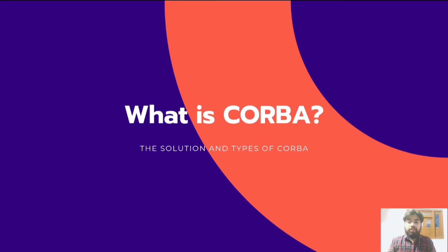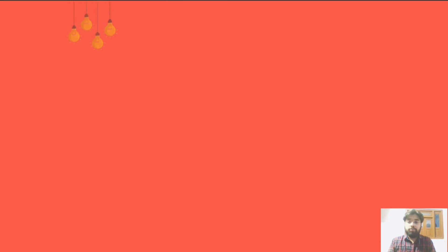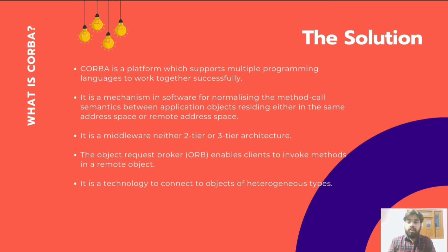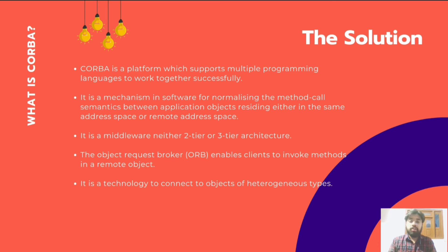Since we are clear with why we need CORBA and its history, let's understand what CORBA actually is. CORBA is a platform which supports multiple programming languages to work together successfully. It is a mechanism in software for normalizing the method call semantics between application objects residing either in the same address space — meaning within an application — or remote address space, meaning the same host or remote host. CORBA is basically a middleware; it is neither a two-tier nor three-tier architecture. The Object Request Broker, or ORB, enables clients to invoke methods in a remote object. It is a technology to connect objects of heterogeneous types — meaning objects of different kinds.